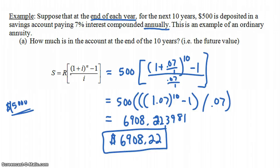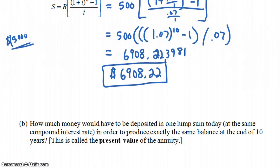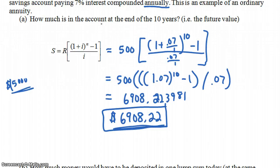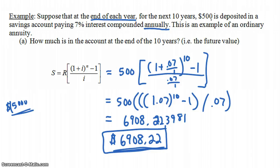Now for Part B, which is the more important question for this section. How much money would have to be deposited in one lump sum today, at the same 7% compound interest rate, to produce exactly the same balance of $6,908.22 at the end of ten years? Instead of making annual payments, you'd put in a single large lump sum right now and let it grow. I expect the answer to be less than $5,000.